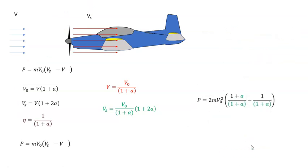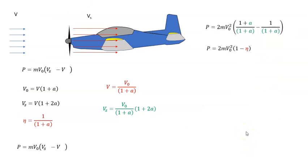1/(1 + a). This becomes 1 - 1/(1 + a). Now, 1/(1 + a) from momentum theory is the efficiency η of the propeller, so it becomes 1 - η.